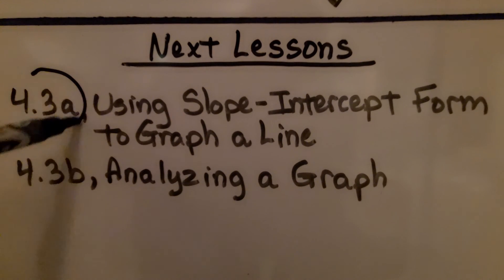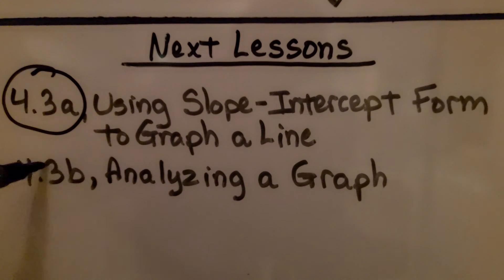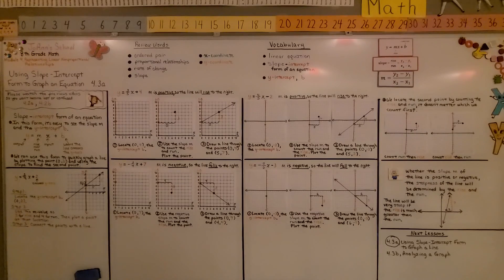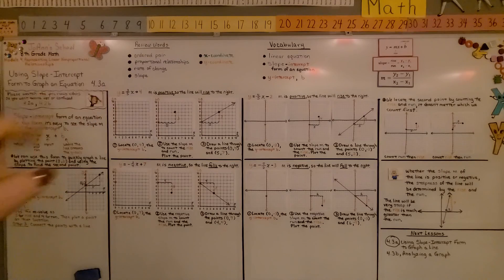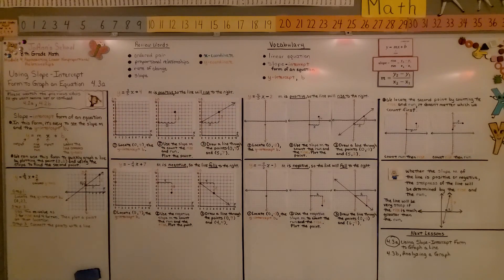We're finished with 4.3a. We're going to move on to the last part: analyzing a graph. Just remember, if that slope m is a negative number, then our line is going to fall to the right. And if that slope m is a positive number, it's going to rise to the right. I hope you enjoy the rest of your day — please join me for the last part of the lesson.